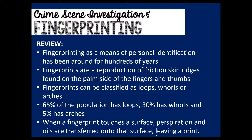Just a quick review: fingerprinting as a means of personal identification has been around for quite some time. Fingerprints are a reproduction of the friction skin ridges found on our fingertips. Fingerprints can be classified in three ways: loops, whorls, and arches. 65% of the population has loops, making loops the most common fingerprint pattern; 30% have whorls; and 5% have arches, making arches the least common and most unique pattern. When a fingerprint touches a surface, perspiration and oils are transferred, leaving behind a print. We can have latent prints or patent prints, which we'll cover in a future lesson.